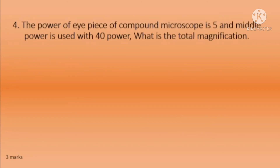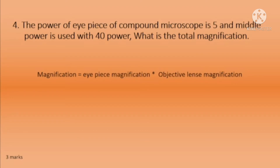Fourth question: the power of the eye piece of a compound microscope is 5x, and the middle power objective lens used is 40x. What is the total magnification? The equation is: total magnification equals eye piece magnification multiplied by objective lens magnification. Eye piece magnification is 5, objective lens magnification is 40, so 5 into 40 equals 200 times magnification.